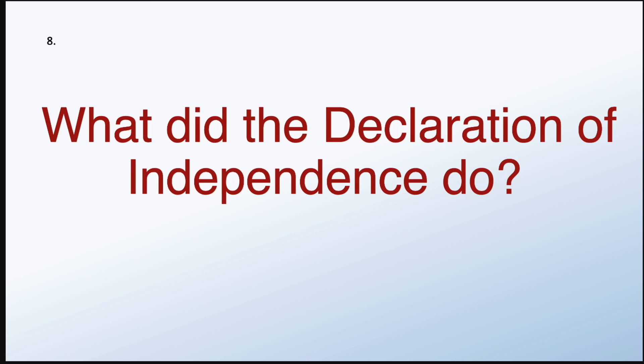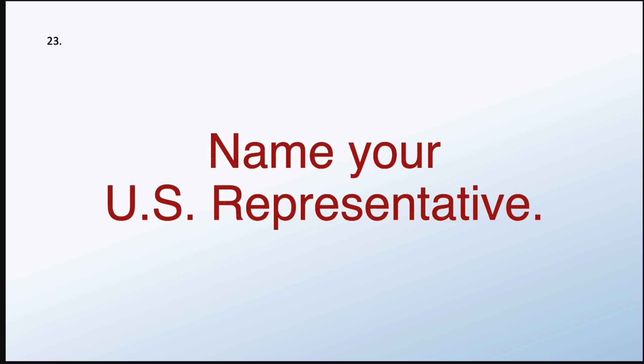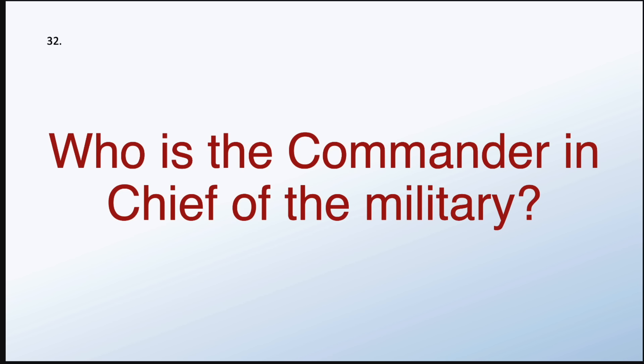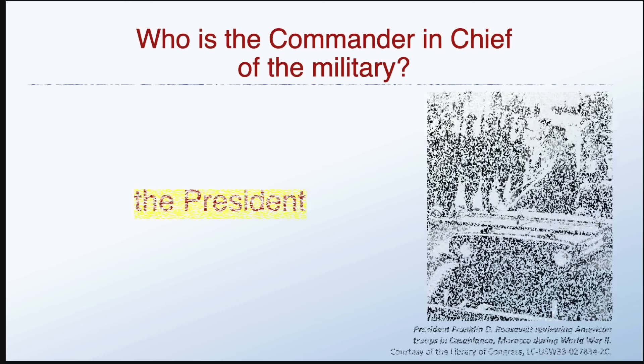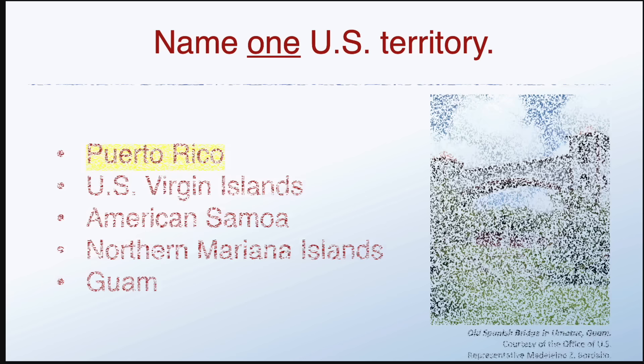What did the Declaration of Independence do? Said that the United States is free. Name your U.S. representative. Answers here will vary depending where you live. Who is the commander-in-chief of the military? The President. Name one U.S. territory. Puerto Rico.